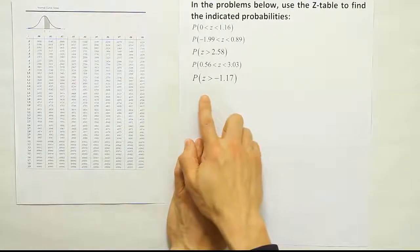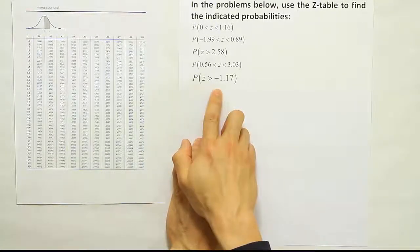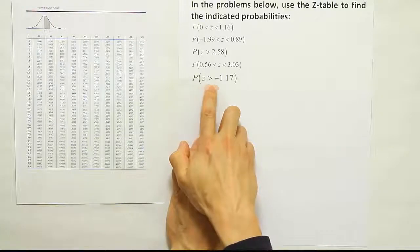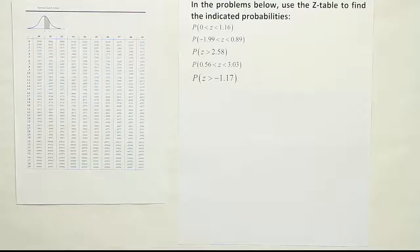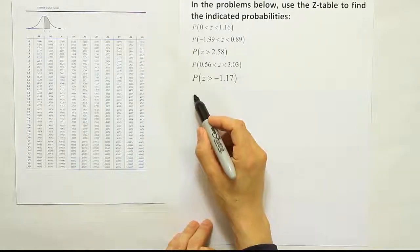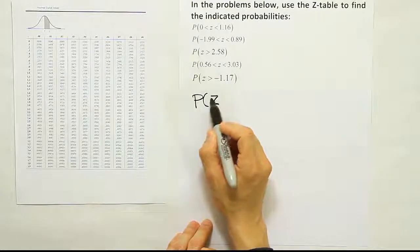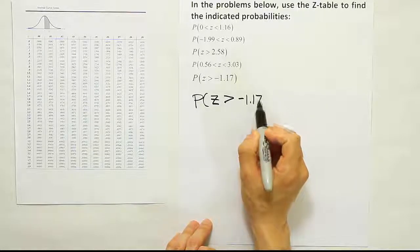So the fifth and final problem that we're going to work out is the probability that z is greater than negative 1.17. Let's write it out so it's a little bit bigger. Probability that z is greater than negative 1.17.